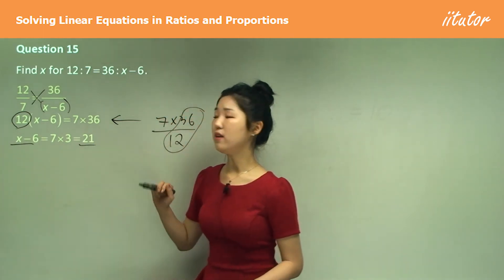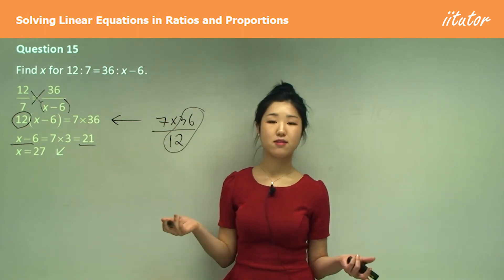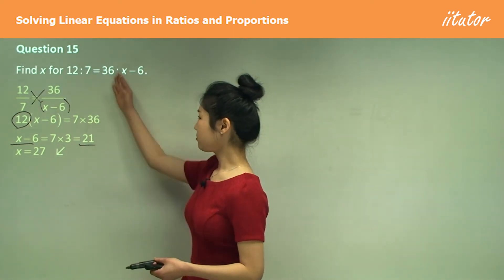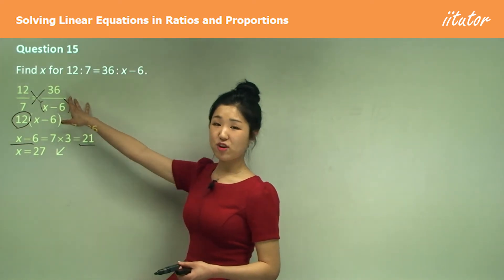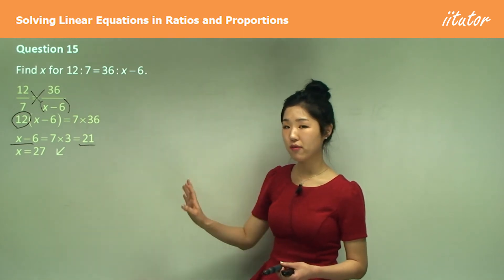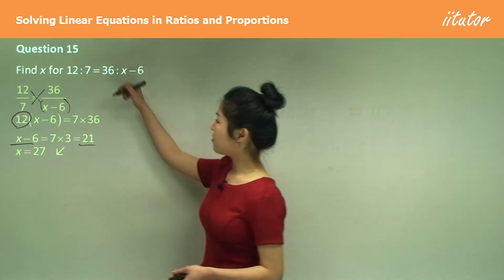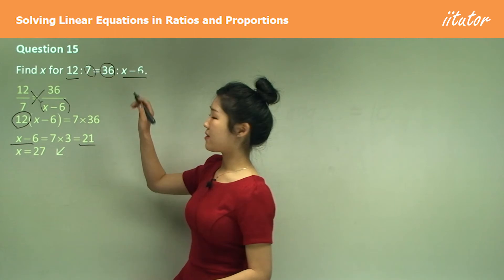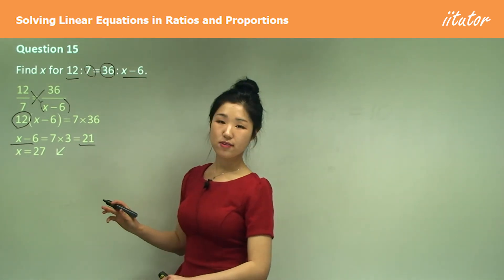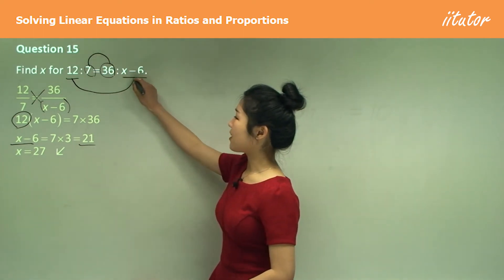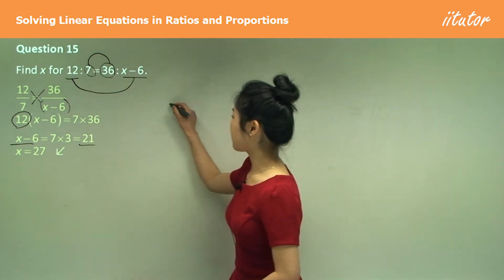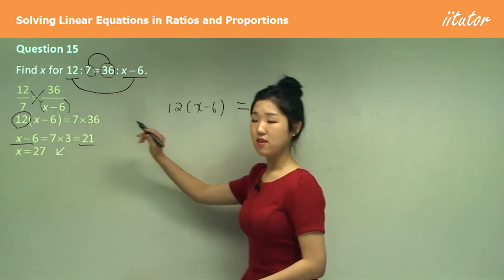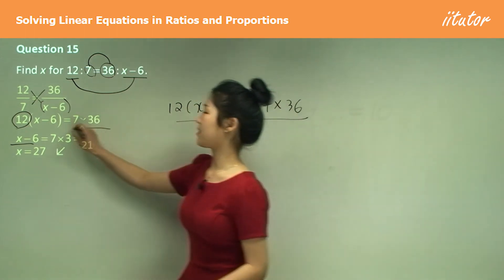So x − 6 = 21. Add 6 to both sides: 21 plus 6 is 27, so x = 27. Here's a little trick with ratios in colon form: the inside numbers (7 and 36) multiply together, and the outside numbers (12 and x − 6) multiply together — it's exactly the same as cross multiplication.